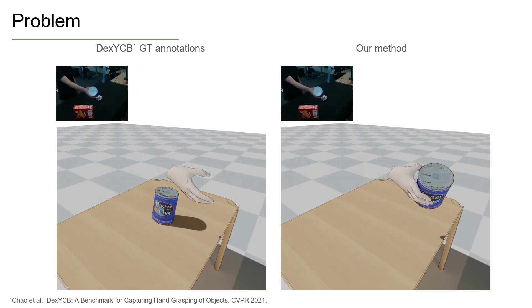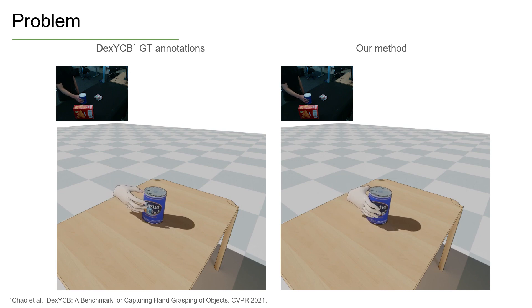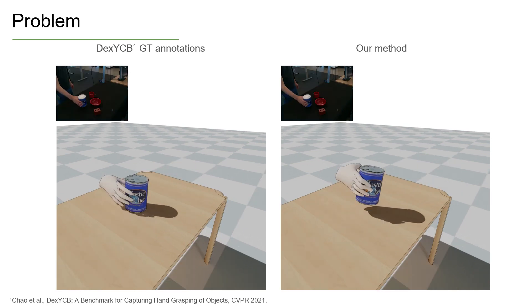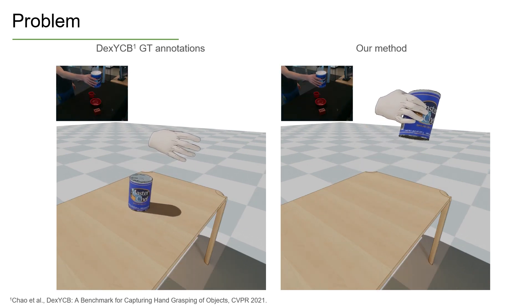Interacting with objects comes naturally to us. However, modeling hand-object interactions is difficult because it involves reasoning about complex physical phenomena, including contact, friction, and dynamics.